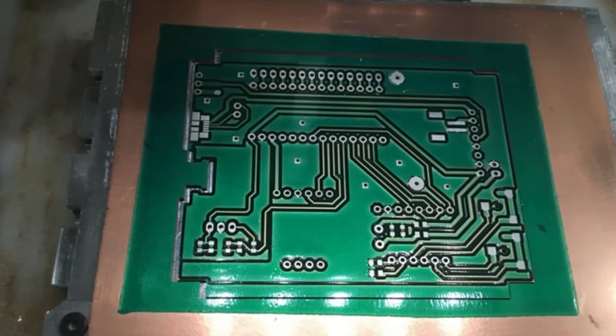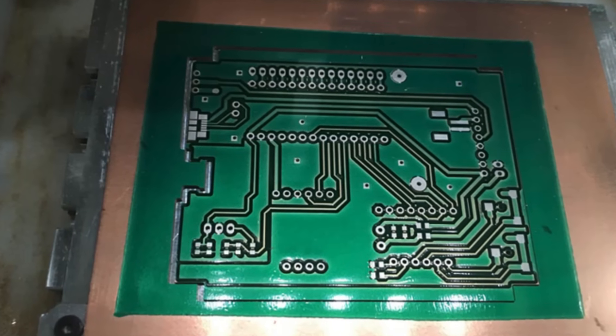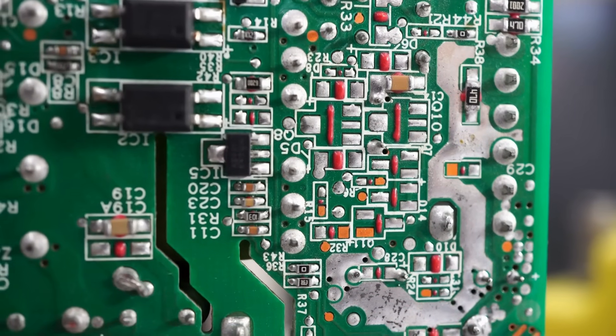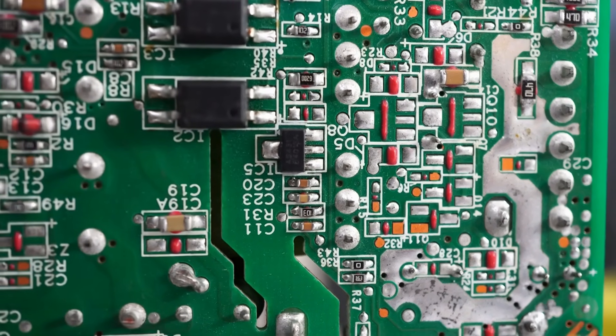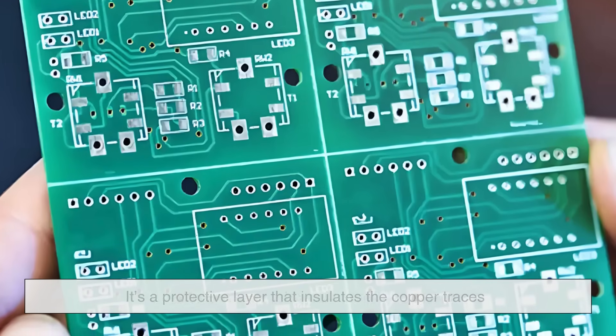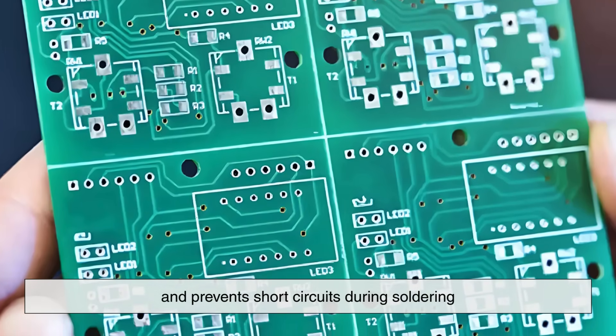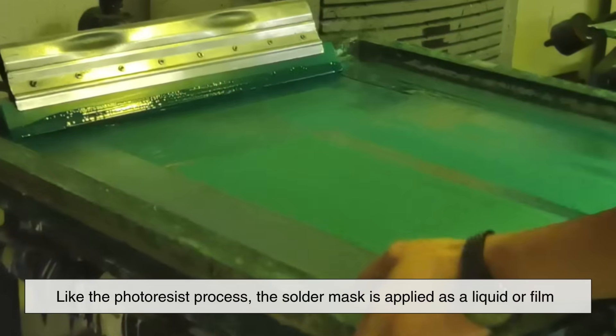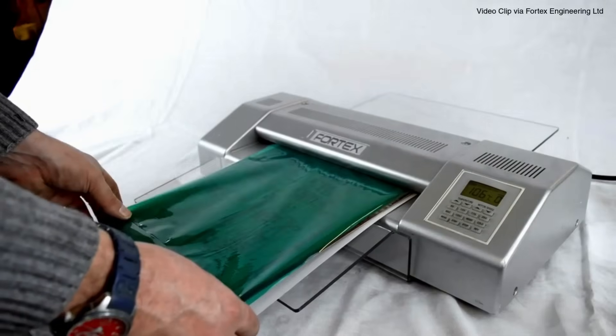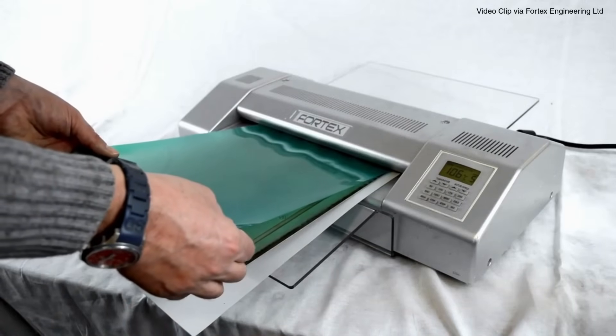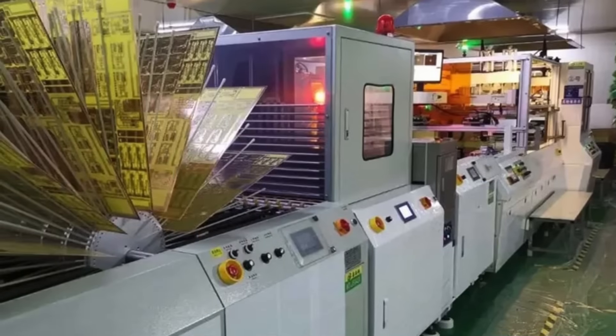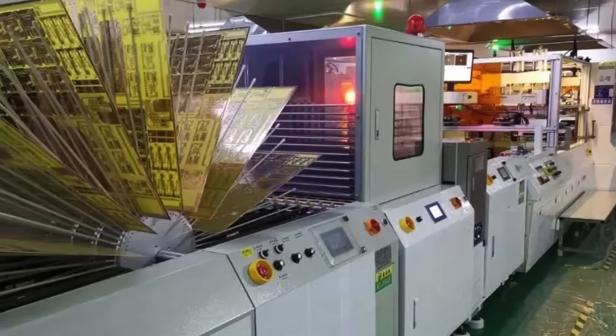With the copper circuitry and plated holes in place, it's time to apply the solder mask. This is the green or sometimes other colored coating you typically see on PCBs. It's a protective layer that insulates the copper traces and prevents short circuits during soldering. Like the photoresist process, the solder mask is applied as a liquid or film, exposed to UV light through a mask, and developed to leave openings only where solder will be applied, usually on pads where components will be mounted.